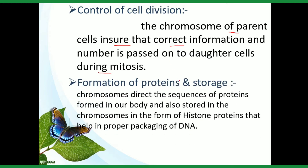Another function is formation and storage of proteins. Protein formation is the function of genes, and genes are organized in the form of chromosomes. So the ultimate function of chromosomes is protein formation and storage. Chromosomes directly sequence the proteins found in our body, and proteins are also stored in chromosomes in the form of histone proteins. Some proteins are stored in chromosomes, and some are used in the body for proper functioning. Histone proteins help in the proper packaging of DNA — these DNA packaging proteins are called histone proteins.